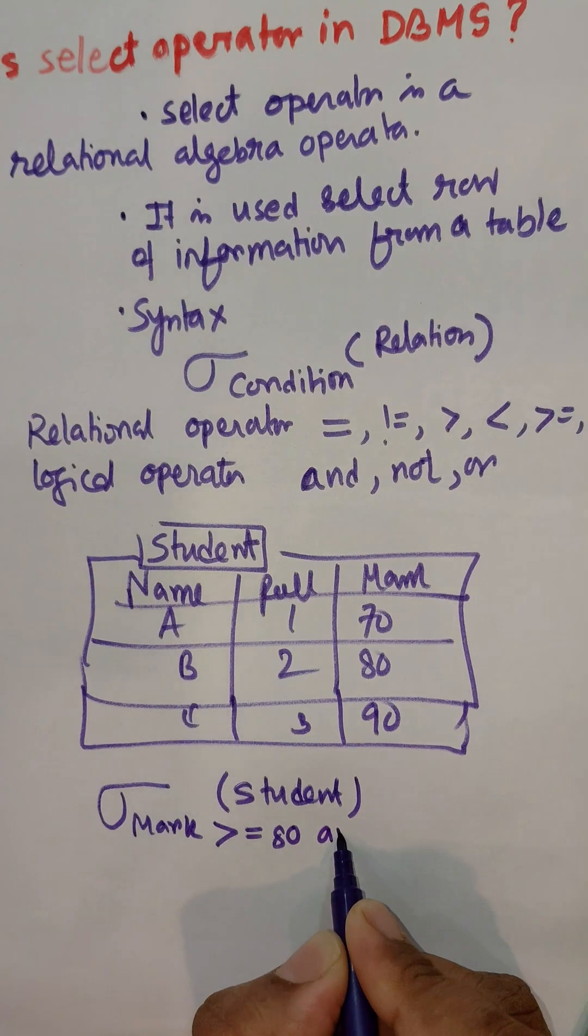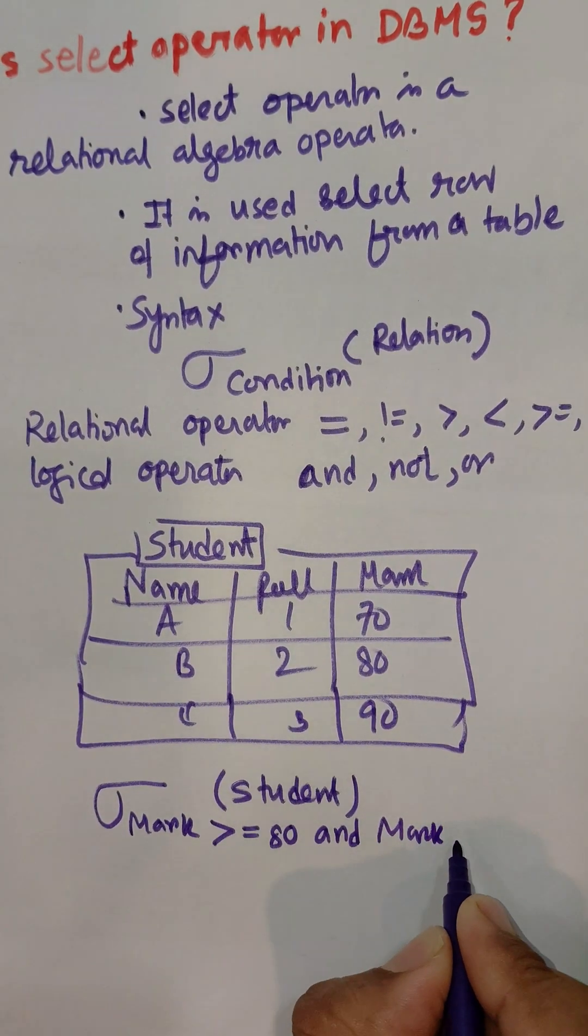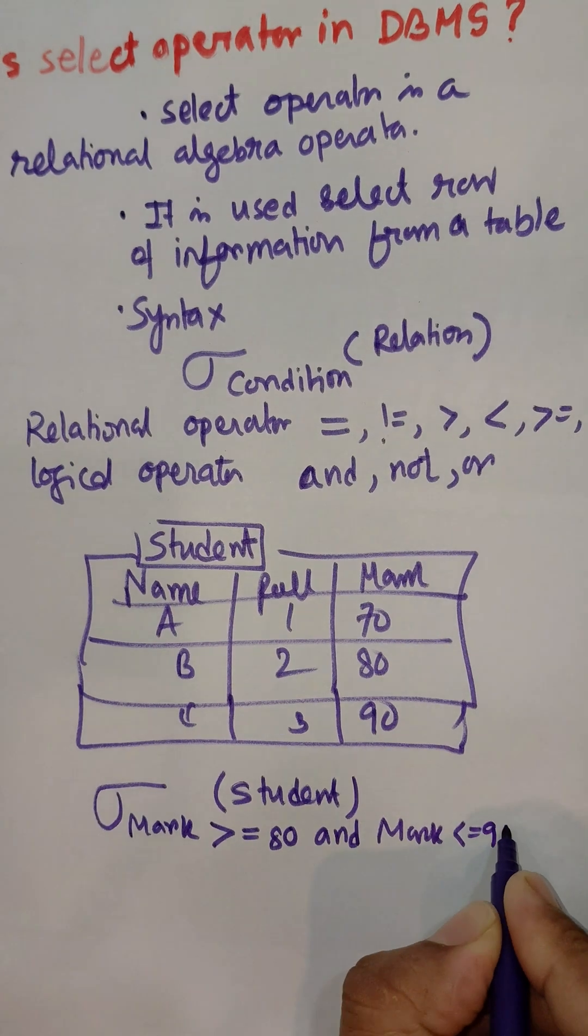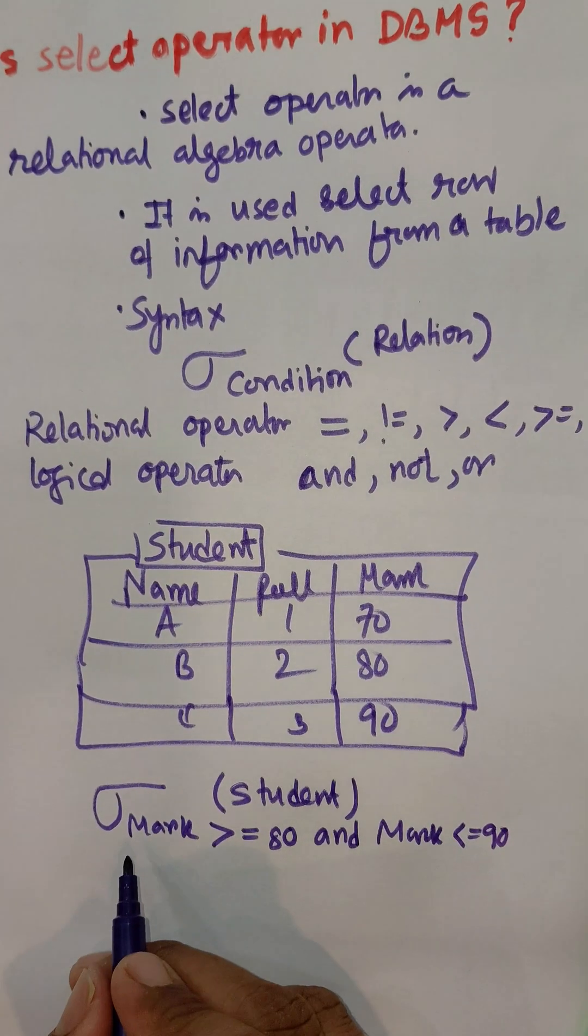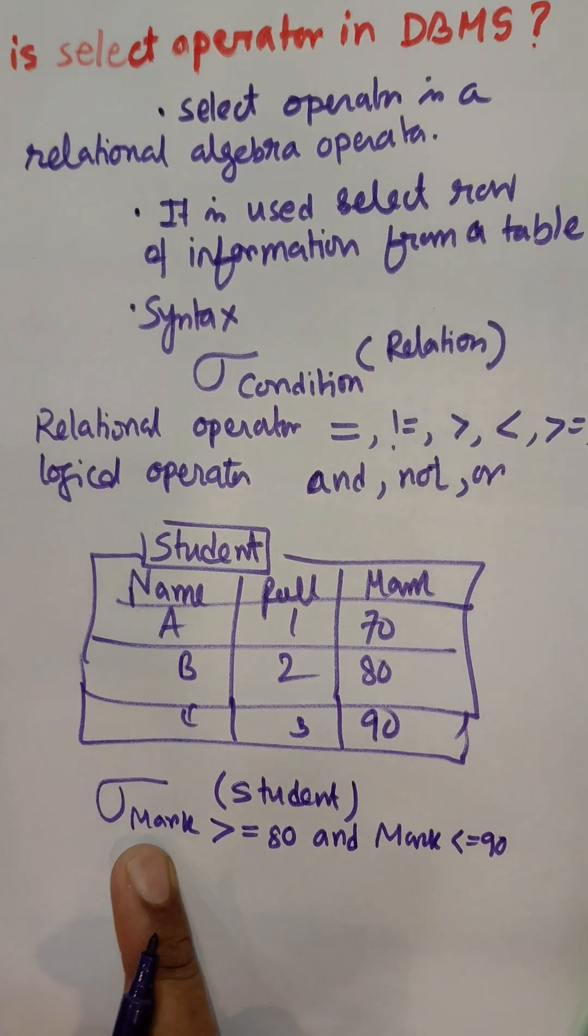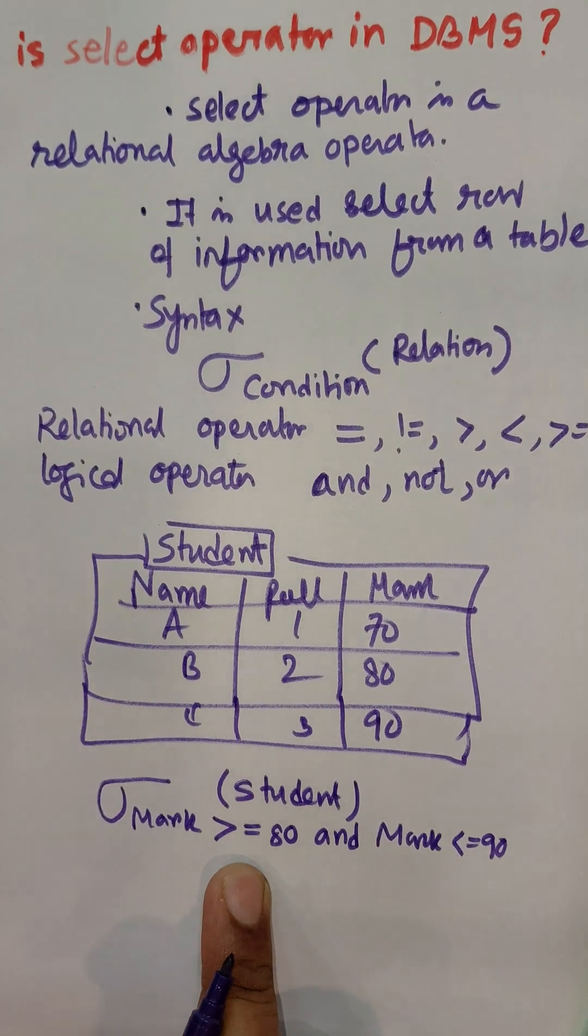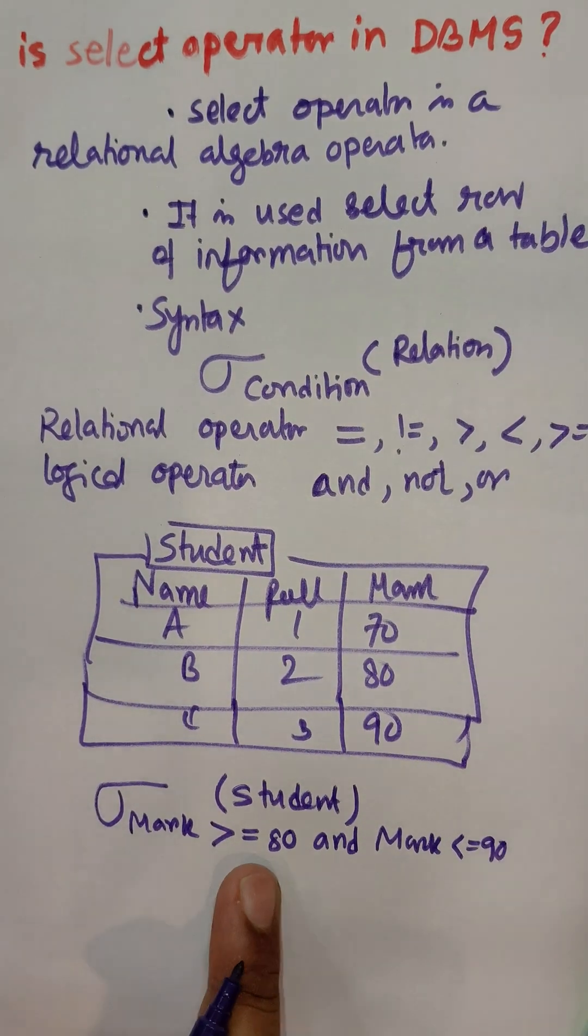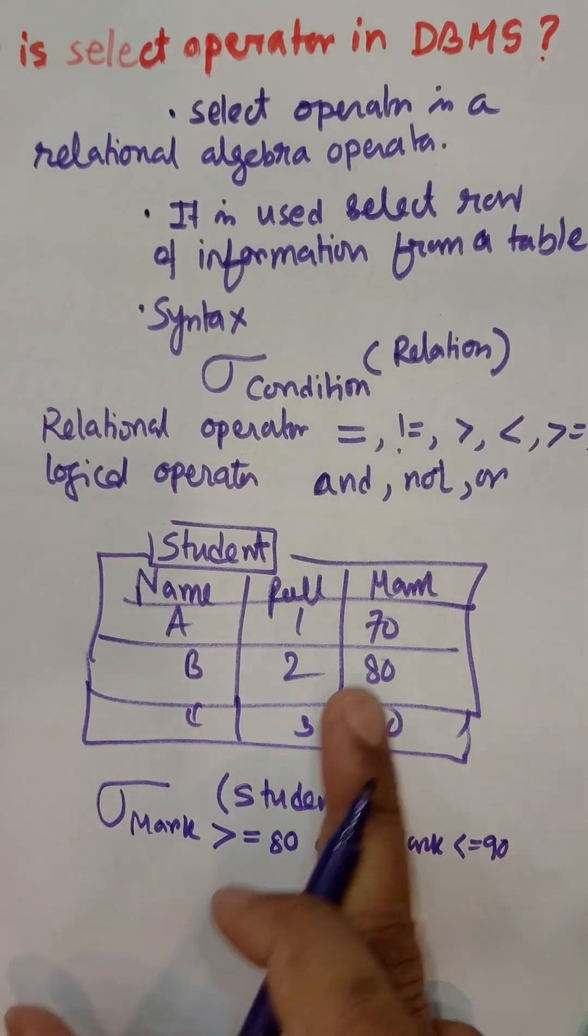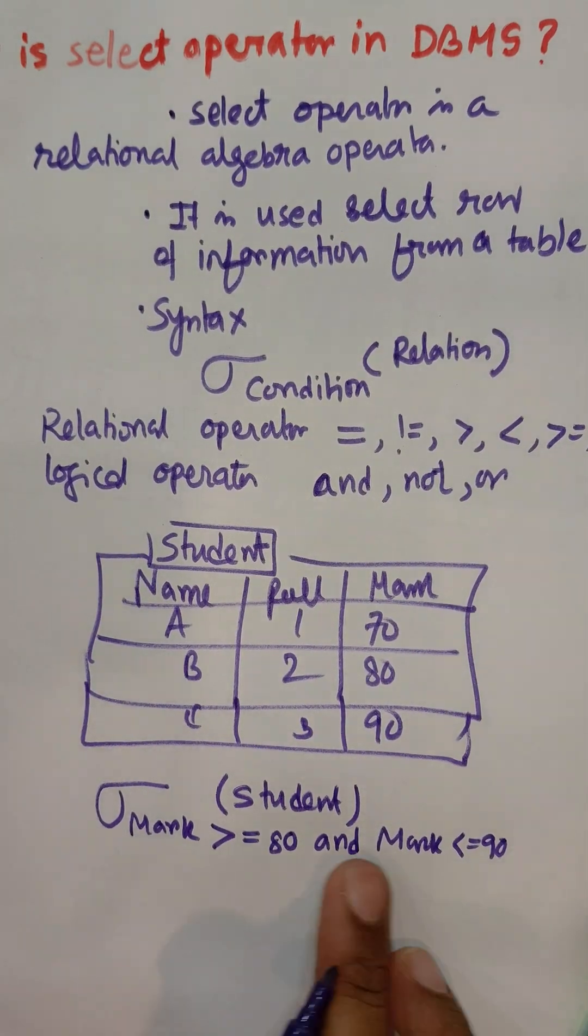This is the condition. This acts as filtering of information from the table. The source is the Student table. It selects rows whose marks are greater than or equal to 80. Here marks of 70 is not selected, but marks of 80 is selected.